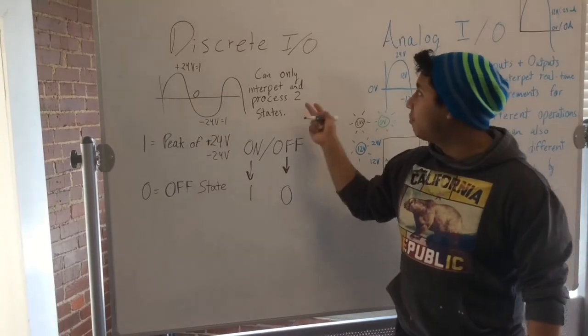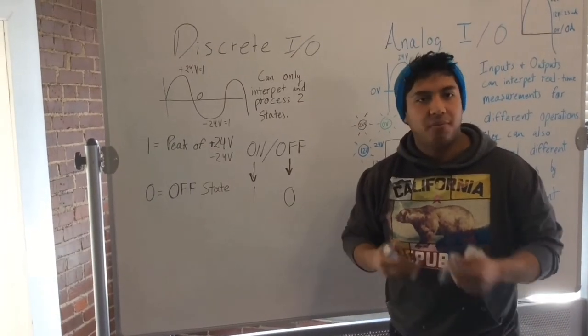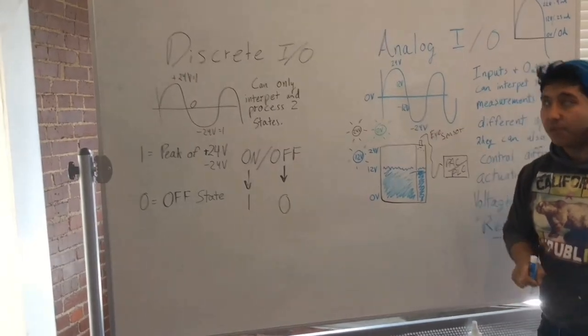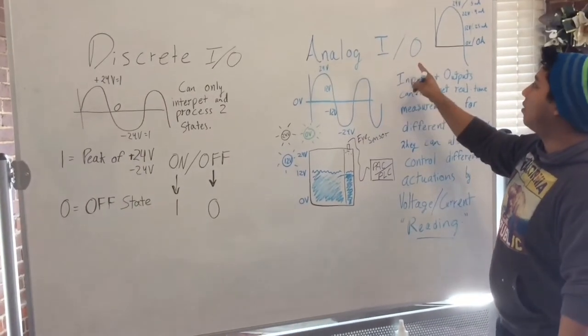And that's discrete input and output modules. Pretty basic. Most PLCs are like that. But to the advanced level, you have analog input output modules.